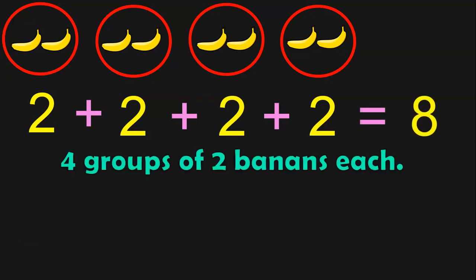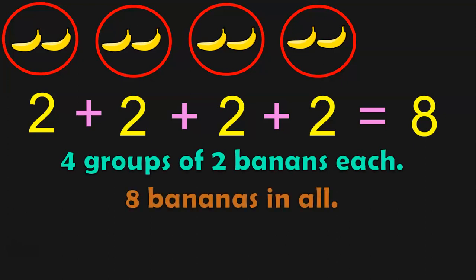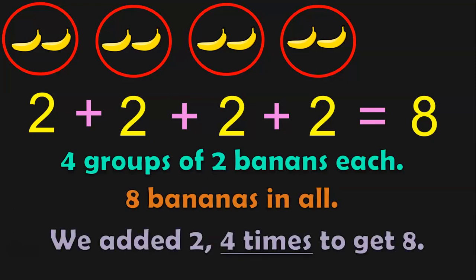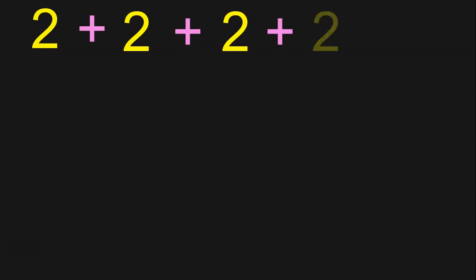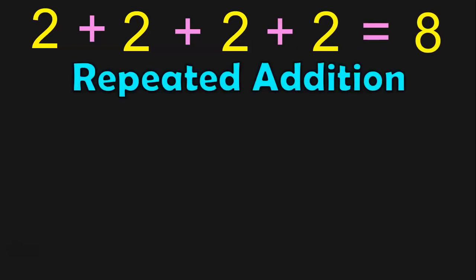4 groups of 2 bananas each makes 8 bananas in all. We added 2, 4 times to get 8. This is what you would have seen in the Introduction to Multiplication video. We added 2, 4 times to get the answer 8. This is called Repeated Addition.